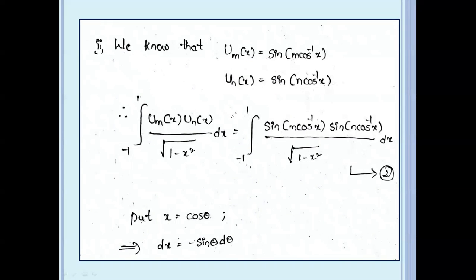Now for the second problem, this is the second kind of polynomial. Um(x) equal to sin(m cos⁻¹ x), and Un(x) equal to sin(n cos⁻¹ x). So the integral from minus 1 to 1 of Um(x) times Un(x) dx divided by root(1 minus x squared) becomes: sin(m cos⁻¹ x) times sin(n cos⁻¹ x) in the integrand.